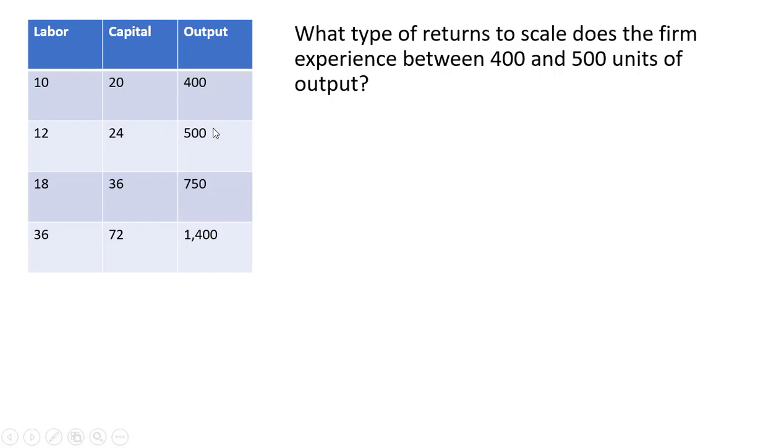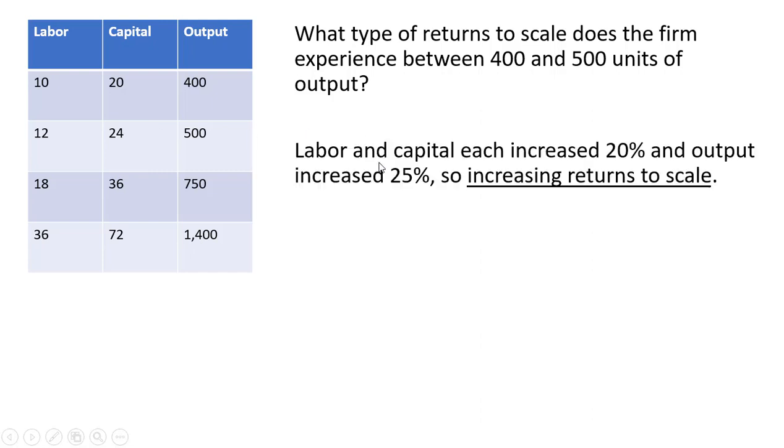So when we go from 400 to 500 units of output, we'll notice labor went from 10 to 12, and capital went from 20 to 24. I'm going to show that labor and capital each increased 20% and output increased 25%.